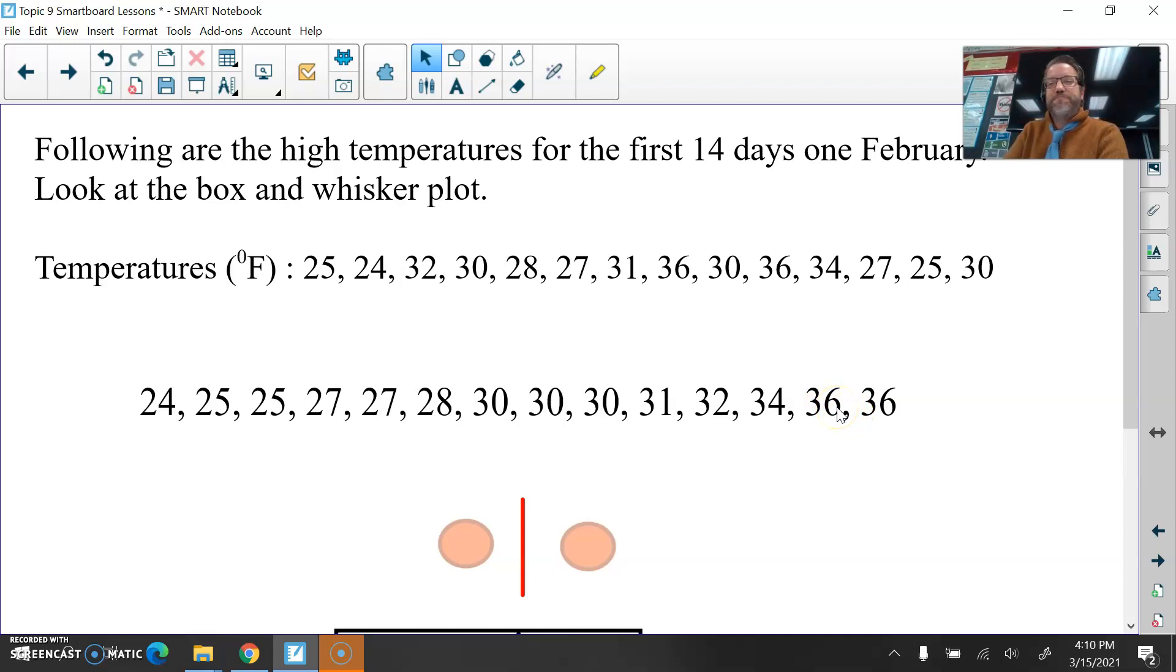So the first thing I need to do is put all these numbers in order from least to greatest. Instead of having them listed chronologically, meaning in order of time, I'm going to list them in order from lowest to highest temperature. And so I have done that right here. We have 14 temperatures for the first 14 days in February. I've listed all 14 numbers across here from least, 24 degrees, to greatest, 36 degrees for the high temperatures.